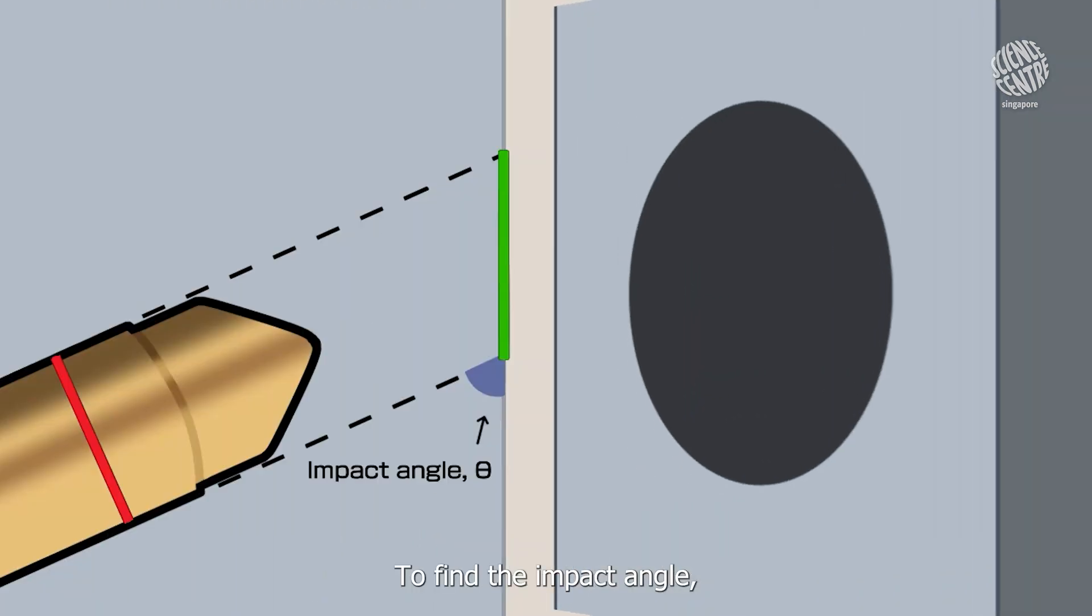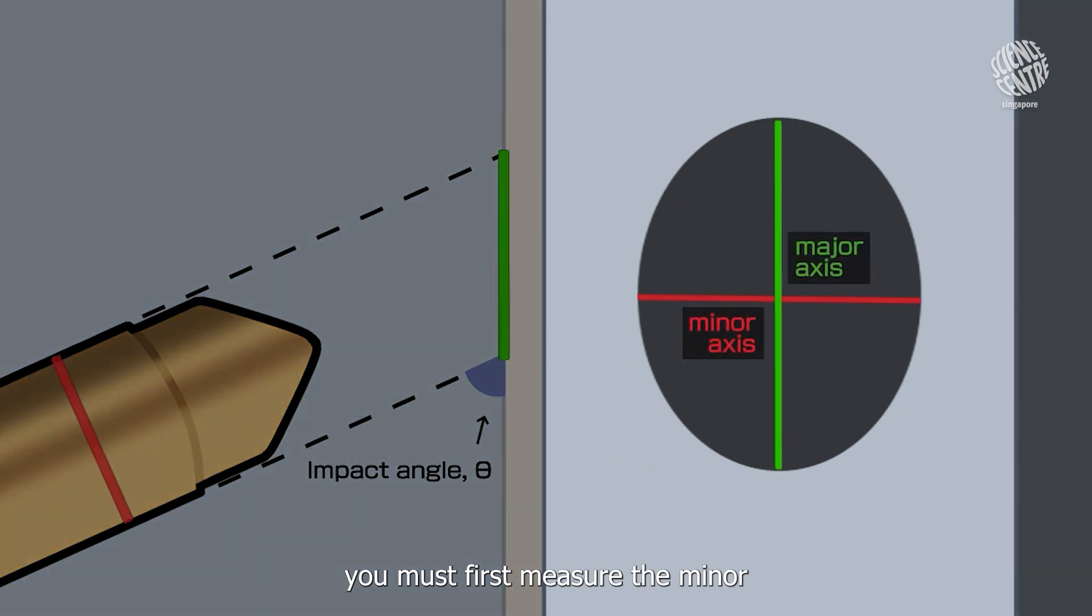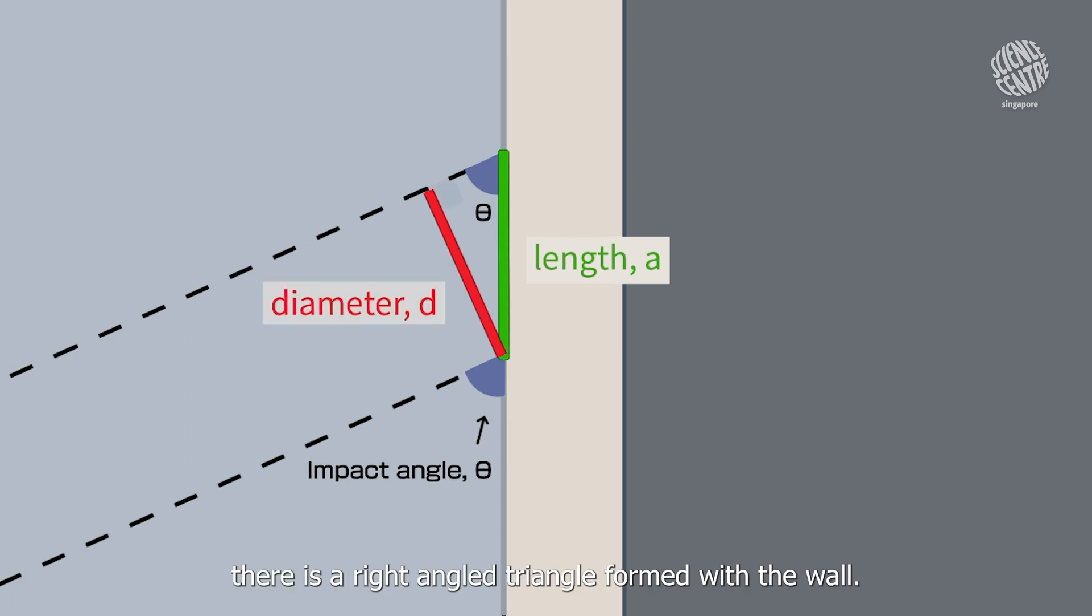To find the impact angle, we must first measure the minor and major axes of the ellipse. As you can see, there is a right angled triangle formed with the wall. In this right angled triangle, this is the hypotenuse, and this is the opposite side.